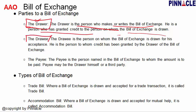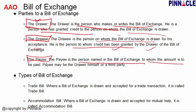Drawee is the person on whom the bill of exchange is drawn for his acceptance. He is the person to whom credit has been granted and who has to pay the bill of exchange. Payee is the person named in the bill of exchange to whom the amount is to be paid. Payee may be the drawer himself, or another third party could be the payee.